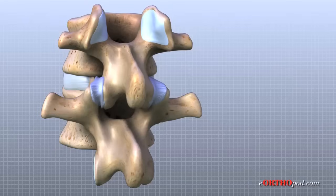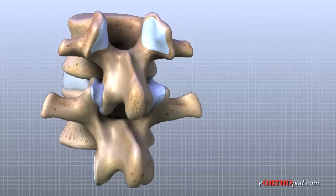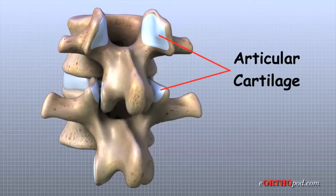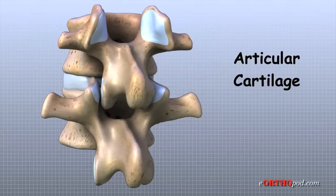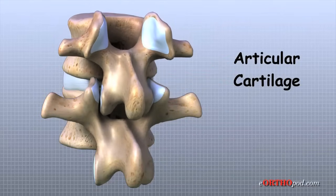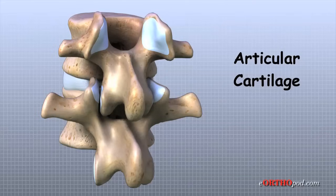The surfaces of the facet joints are covered by articular cartilage. Articular cartilage is a smooth rubbery material that covers the ends of most joints. It allows the bone ends to move against each other smoothly without friction.